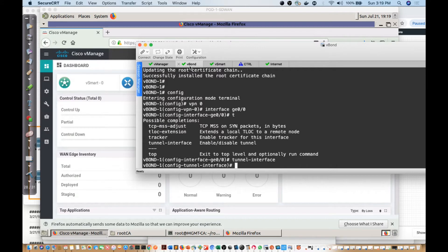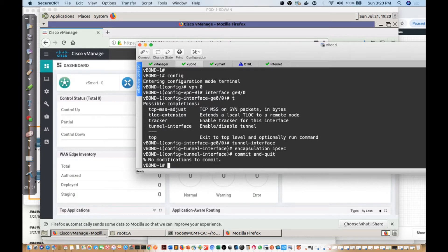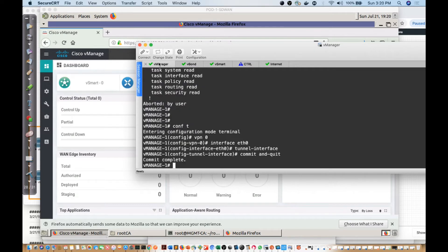But in this instance, since the vBond is responsible for security, I'm going to say I want to use encapsulation IPsec. Then I'll say commit and quit. It says no modifications to complete, so those were all in. Did vManage already have it too? No, the vManage didn't.